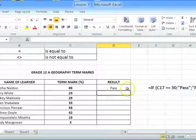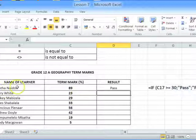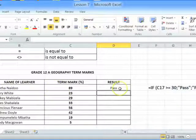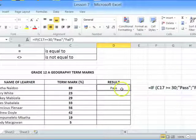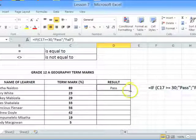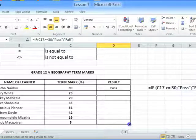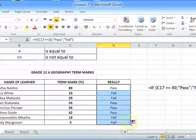I go back to the cell. Now it becomes an active cell. Using the fill handle, I will now copy the formula down for the other learners in Grade 12A.